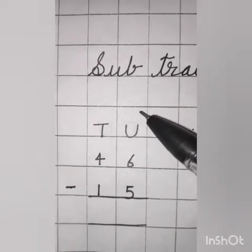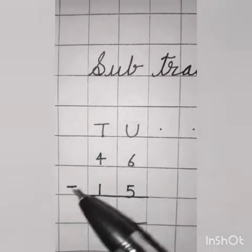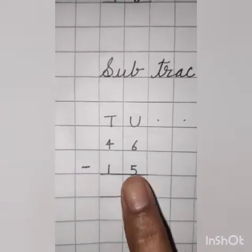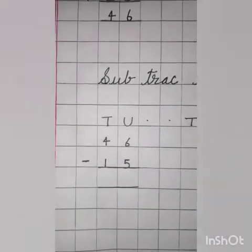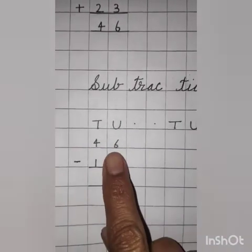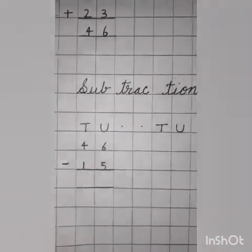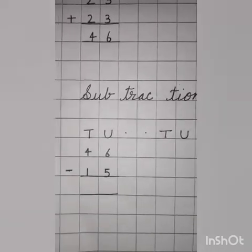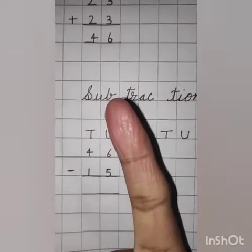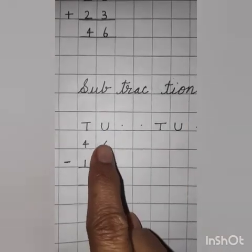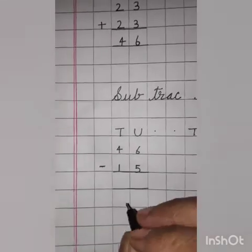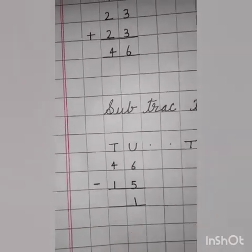Now, first we will solve unit side. Six minus five. Throw. Yes. Five. Throw five. Count till six. Throw five. Five. What comes after five? Six. How many fingers are left? Yes. One. So, answer is one.